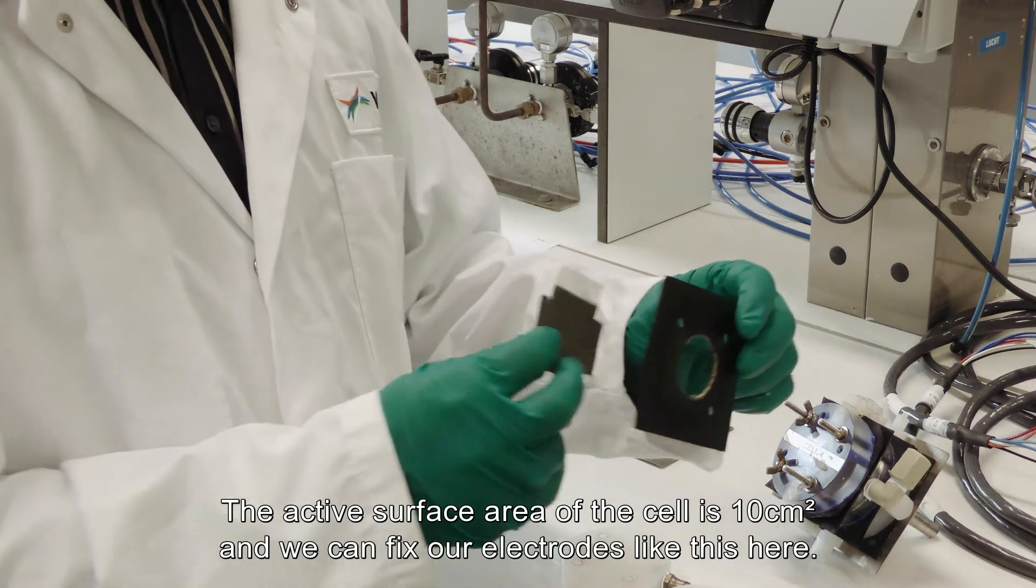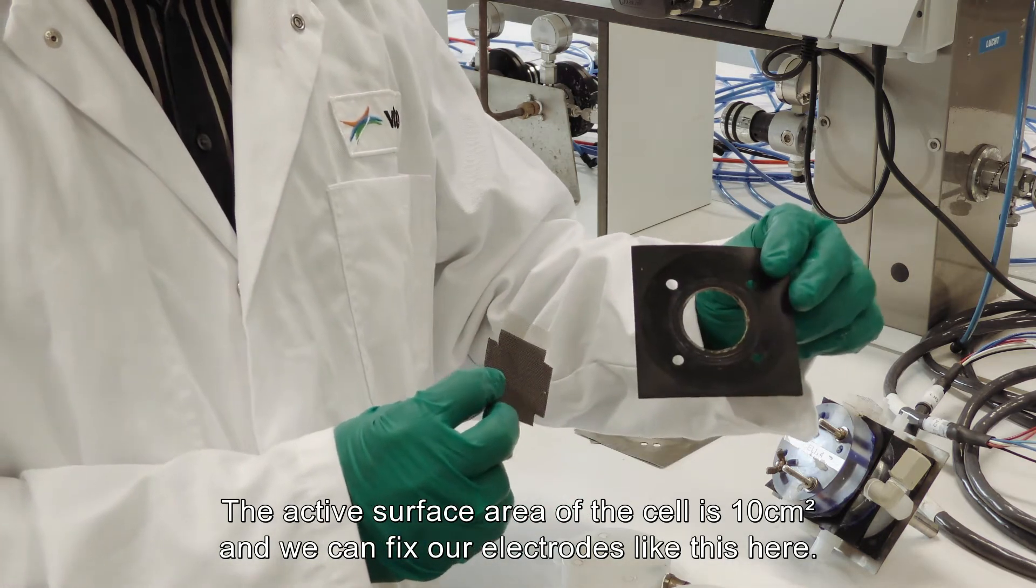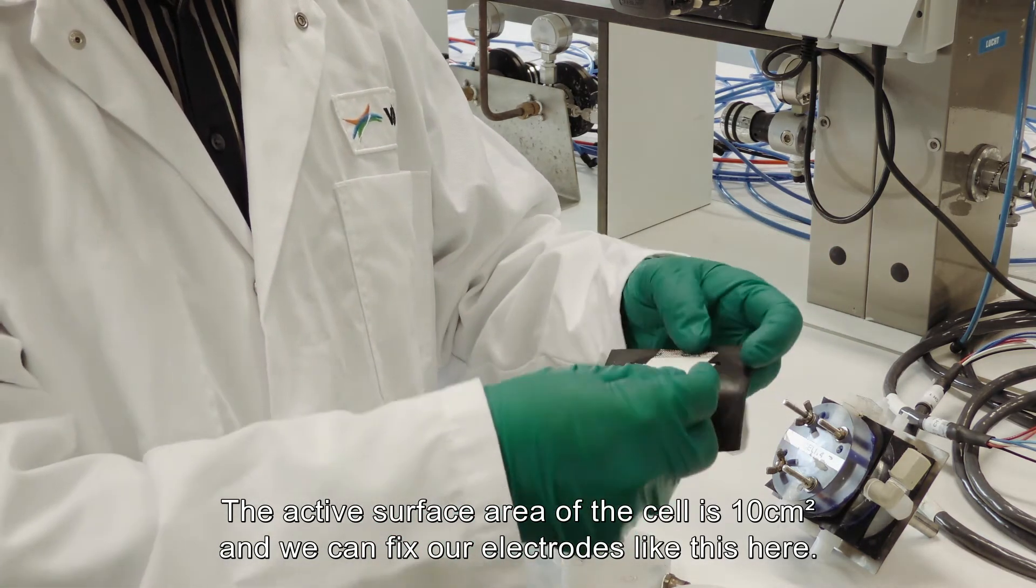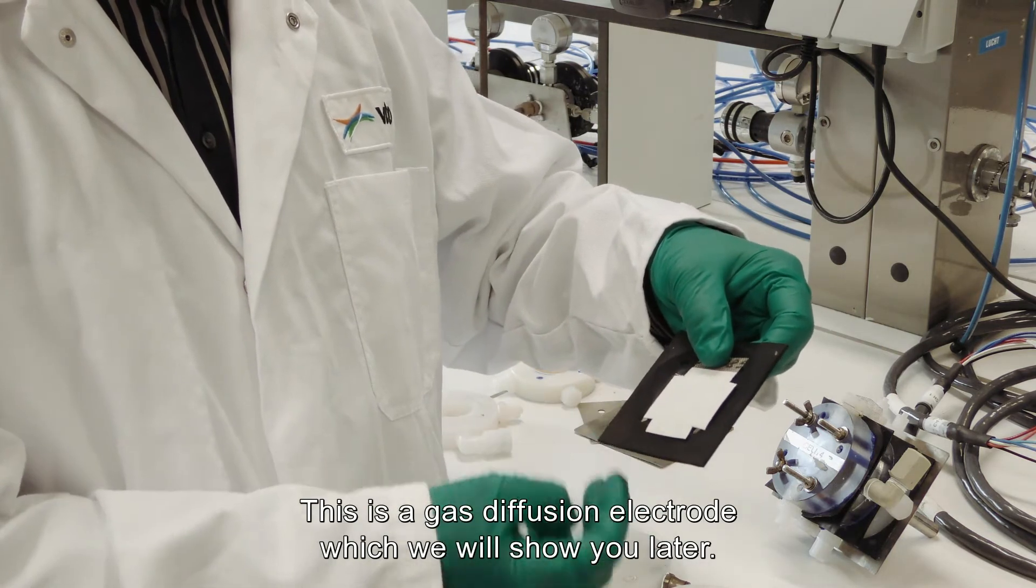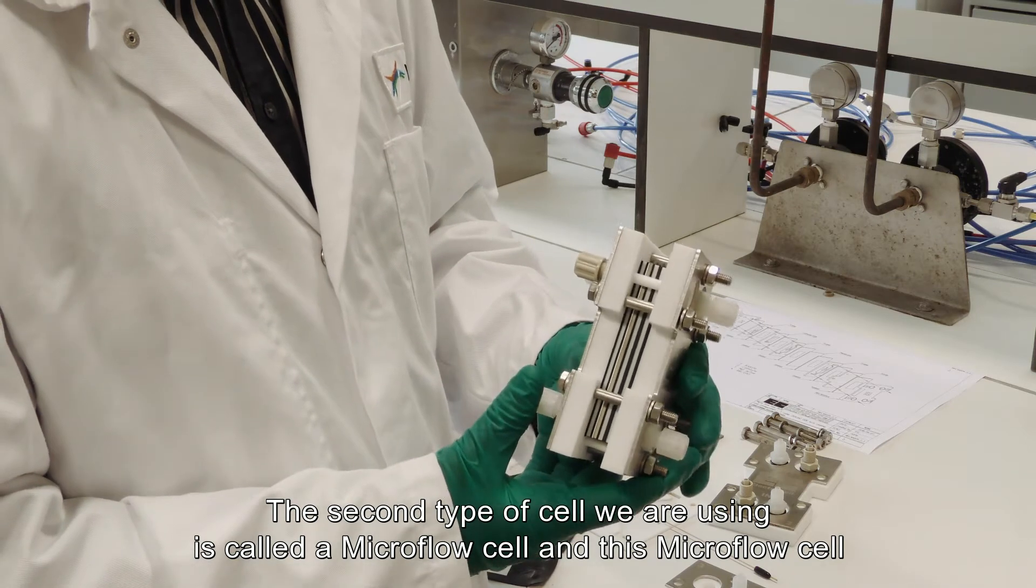The active surface area of the cell is 10 cm² and we can fix our electrode like this here. This is a gas diffusion electrode which we will show you later. The second type of cell that we are currently using is called a micro flow cell.